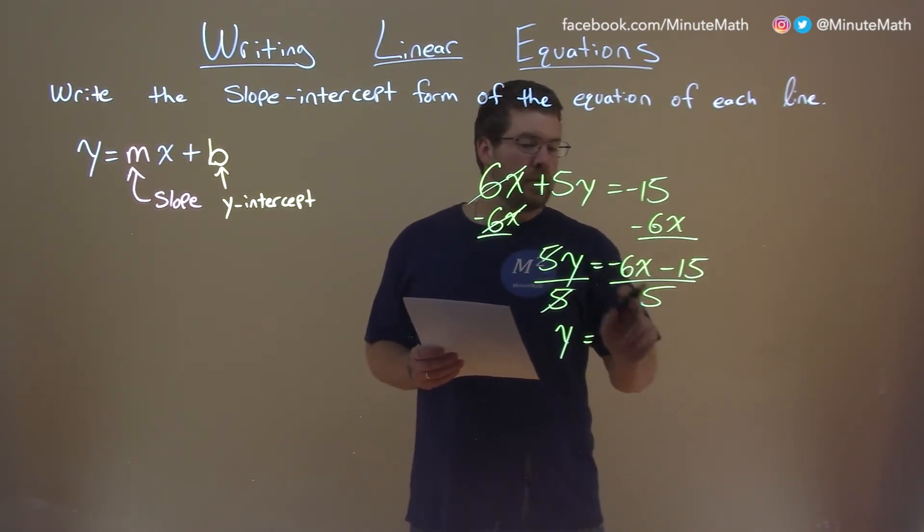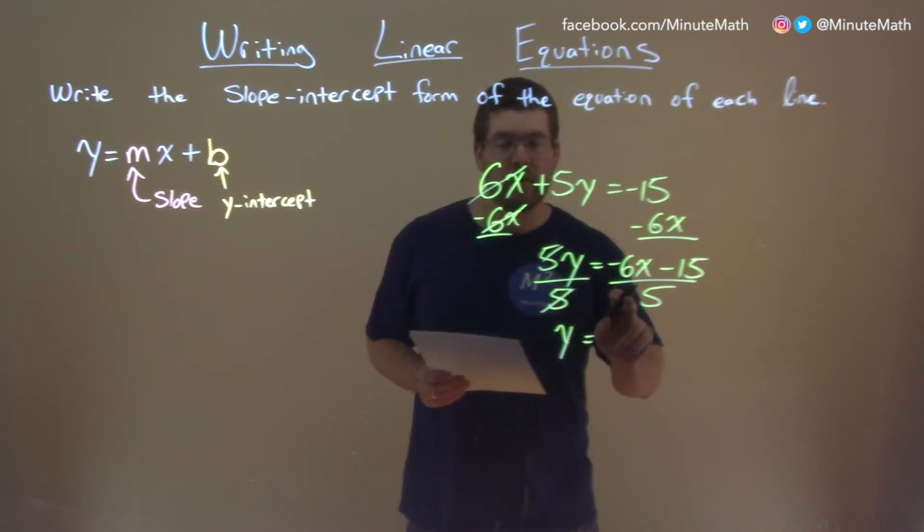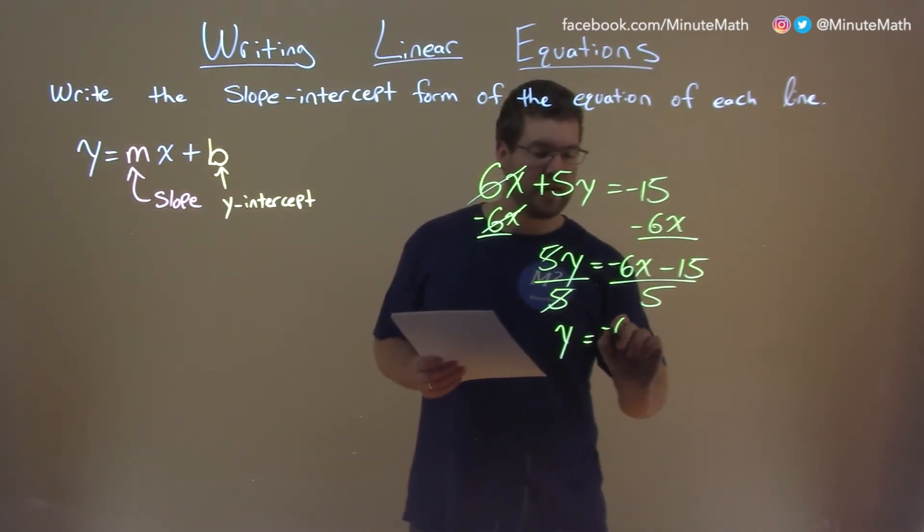5 goes to both parts, so negative 6 divided by positive 5. Can't simplify that really anymore. We have negative 6 fifths x. That is our slope, negative 6 fifths.